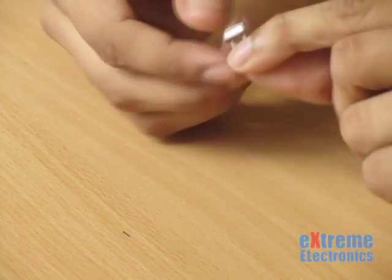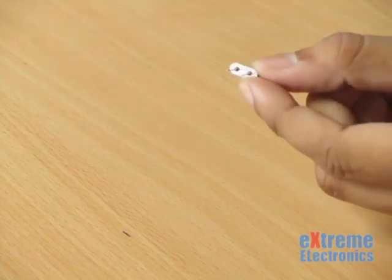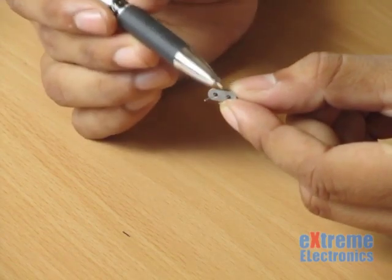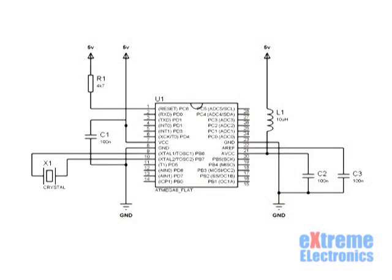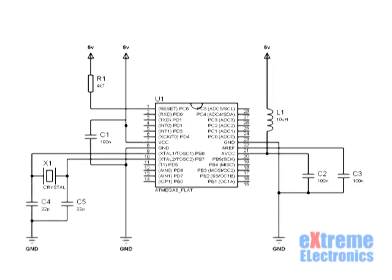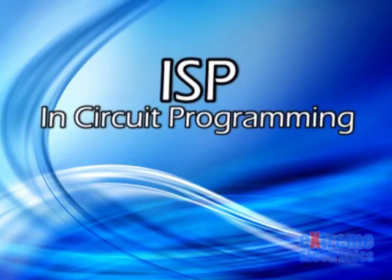This is a 16MHz crystal oscillator with two pins. In ATmega8, pin 9 and pin 10 are the crystal connection pins, named XTAL1 and XTAL2. You simply connect the crystal to these two pins, and then connect both pins to ground via a 22pF capacitor. The oscillator part is now complete.